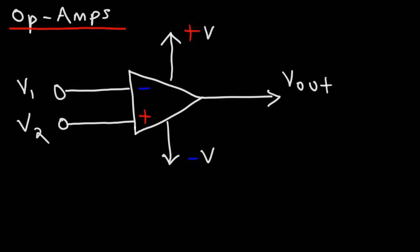In this video we're going to talk about op amps. An op amp is short for an operational amplifier. Op amps are basically high gain differential amplifiers. These devices amplify the difference between the input voltages V1 and V2.